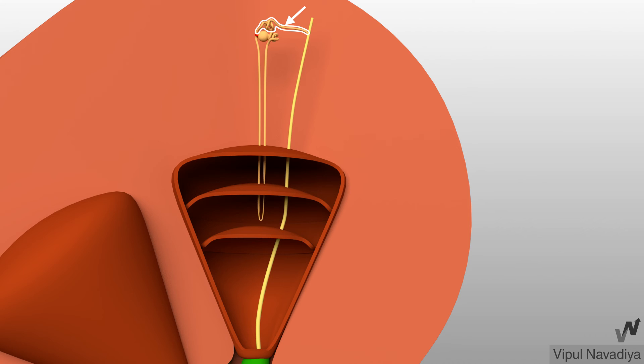Now the distal tubule. It lies entirely in the cortex. The cells of the distal tubule are similar to the cells of the thick ascending limb, having numerous microvilli and mitochondria.